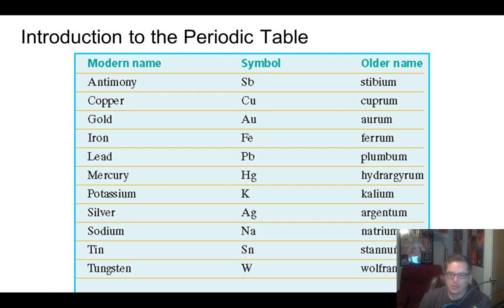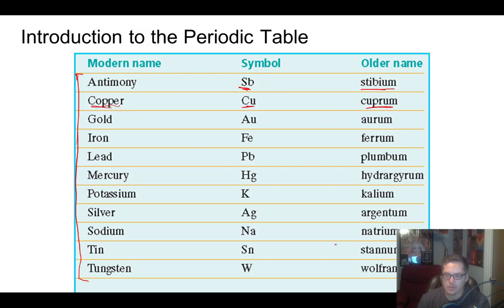Some elements have symbols that don't seem to match their names. These come from older Latin or historical names. For example, antimony has the symbol Sb because it used to be called stibium. Copper is Cu because it came from the Latin cuprum. Lead is Pb because it came from the Latin plumbum — kind of a fun name in itself. Here's a whole list of those; this might help you remember them.